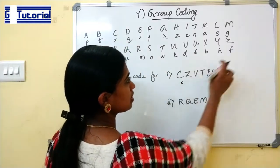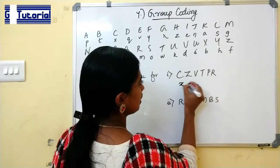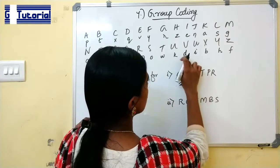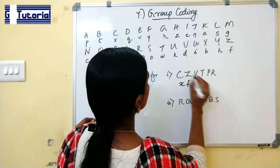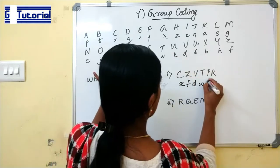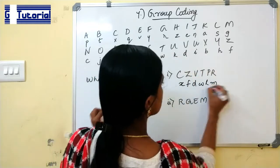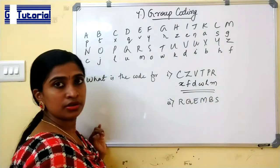By just checking the table, you can find the answer. C is coded as X, Z is coded as F, B is coded as D, D is coded as W, P is coded as L, R is coded as M. This is the answer for this question.